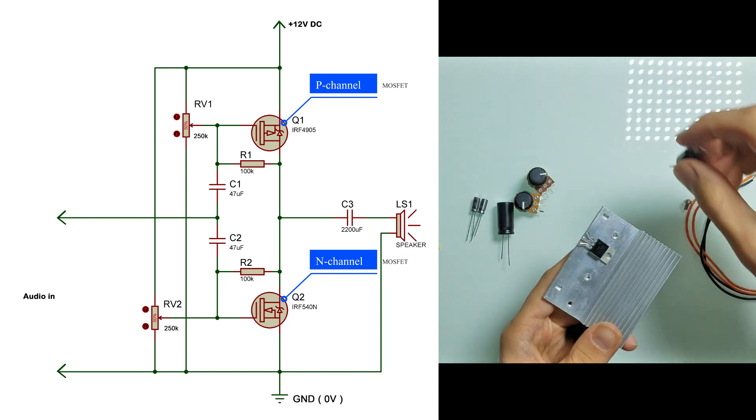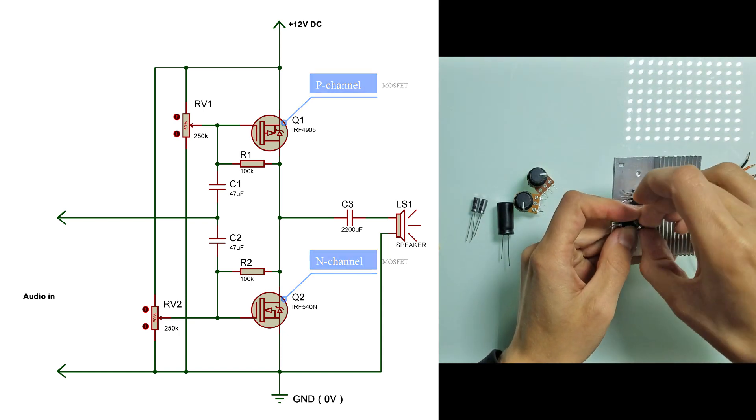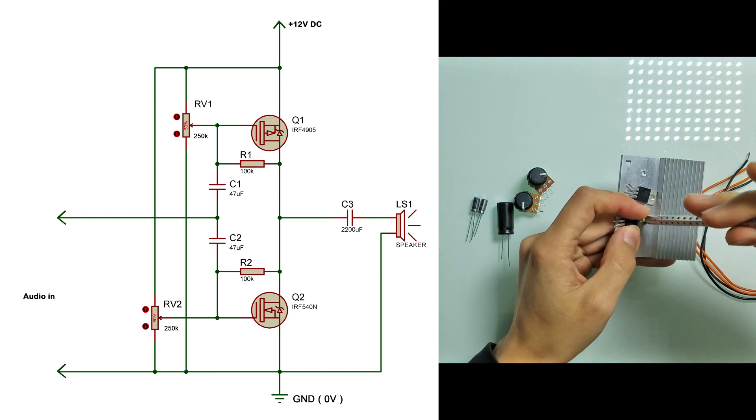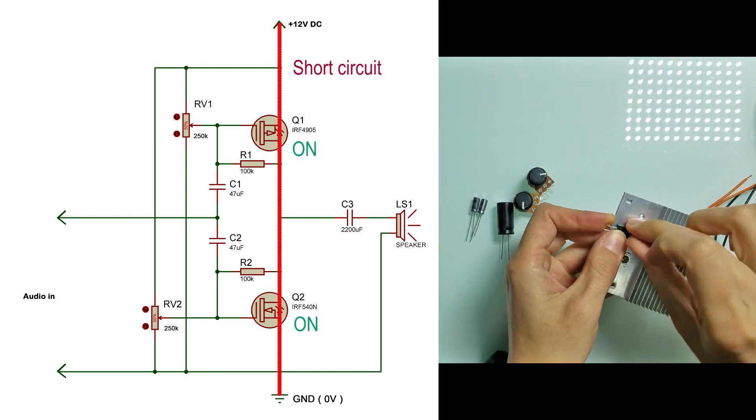From the circuit we can see that it has one N-channel MOSFET and one P-channel MOSFET. The tricky part of this project is to never turn both MOSFETs on at the same time, because we will get a short circuit.